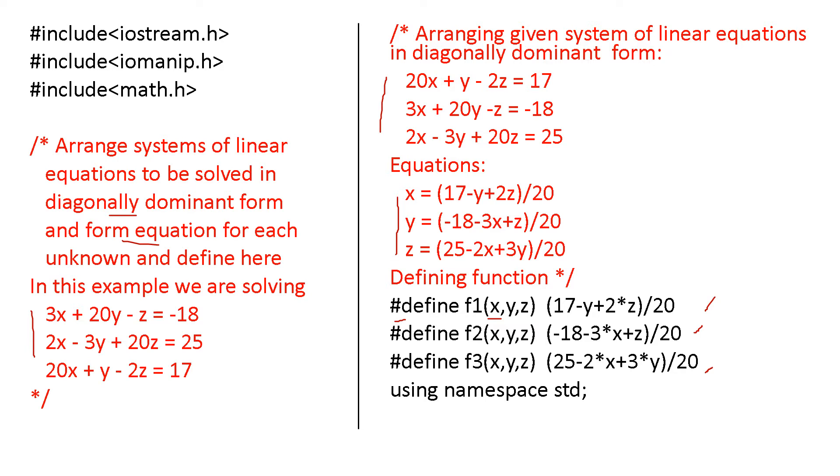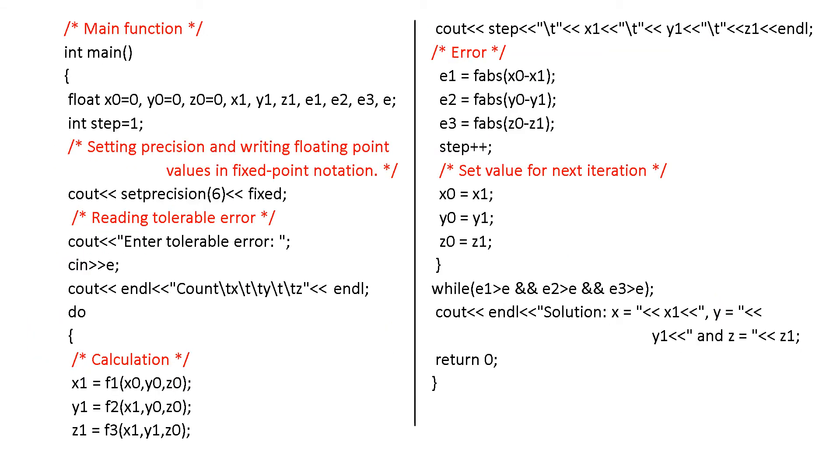While learning the program, just ignore the red statements, red color statements because they are just for your knowledge. Now, come to the main section. The variables declared in float are x0, y0, z0, x1, y1, z1, e1, e2, e3, and e.